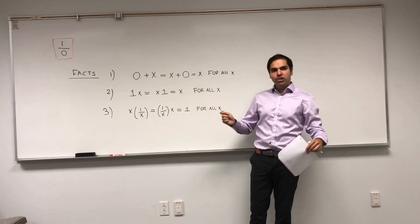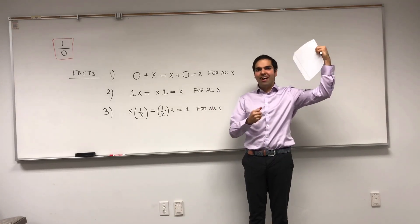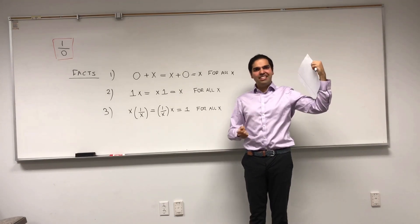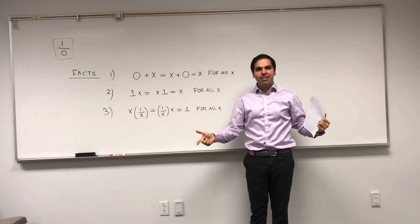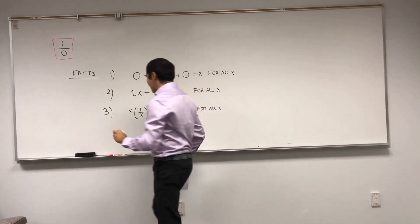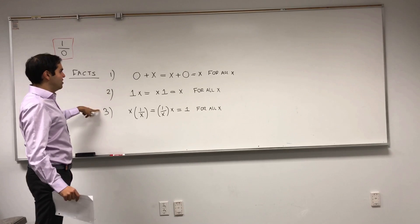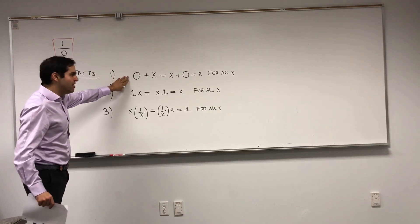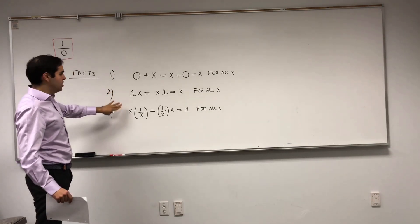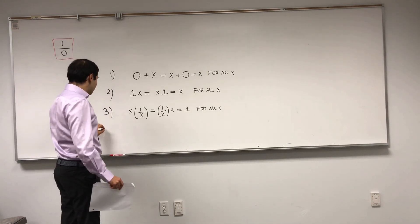So, like 1 over 2, it's not really the number 1 divided by the number 2. It's the number such that if you multiply by 2, you get 1. So, those are the three definitions we need. Again, that's the definition of 0, the definition of 1, and the definition of 1 over x.